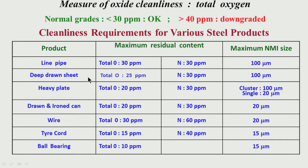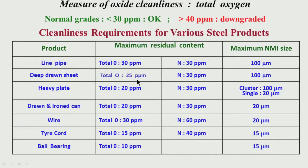Another important product is deep drawn sheet, which is used for making many applications like car body panels, filters, and other important uses. The oxygen requirement is even more stringent at 25 ppm, nitrogen is 30 ppm, and the maximum NMI size is 100 microns.